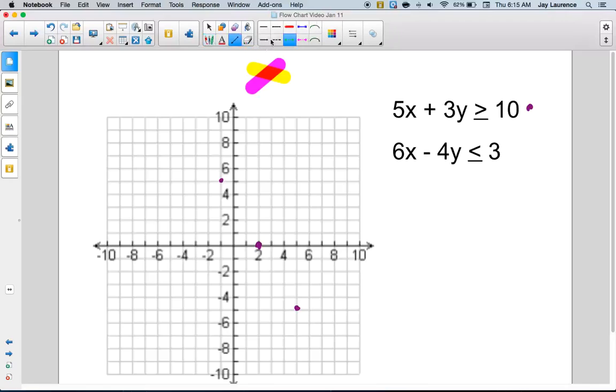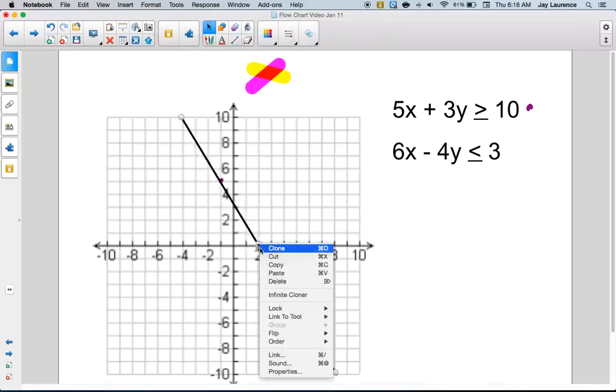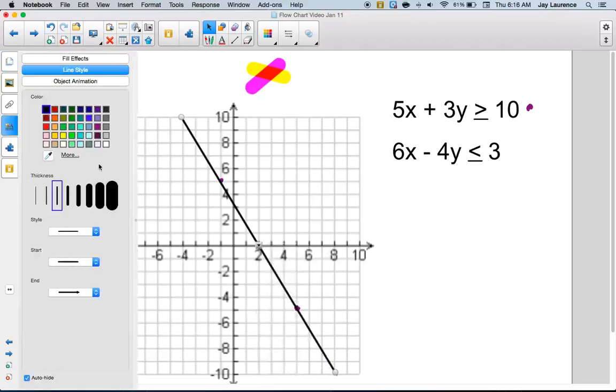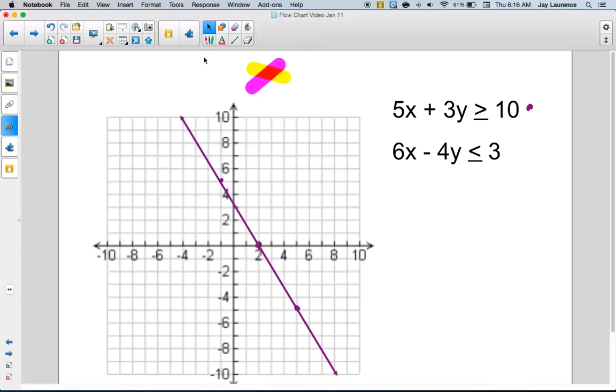So, now I'm going to need a line. But this time, I'm going to want a solid line. Because it is equal to. All right. So, I'm going to change this line. Make sure it's truly aligned by putting arrowheads on both ends. And there we go.